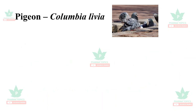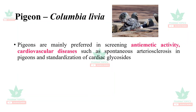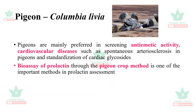The pigeon, Columba livia, is mainly preferred for screening anti-emetic activity, cardiovascular diseases such as spontaneous arteriosclerosis, and standardization of cardiac glycosides. It is also used for bioassay of prolactin through the pigeon crop method, which is one of the important methods in prolactin assessment.